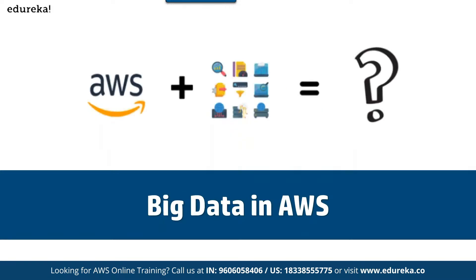Now talking about big data in AWS. AWS is the cloud service provided by Amazon. Similarly, we have Microsoft Azure, which is the cloud service from Microsoft, and GCP — Google Cloud Platform — from Google. In the case of big data in AWS, you combine the AWS platform with different forms of data that you can manage easily.